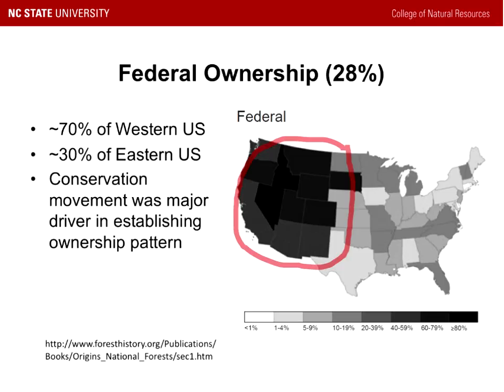The reason for this distribution is really related to how we settled the United States. When European settlement was taking place, public domain lands were given away as incentive to move people across the country. As we were moving across the U.S. and clearing land for agriculture, we hit the Midwest area — a very dry area — and ran into the prairie. People started to be concerned there wouldn't be any trees left. Figures like Gifford Pinchot, Teddy Roosevelt, John Muir, and the National Park Service were setting aside land for conservation.